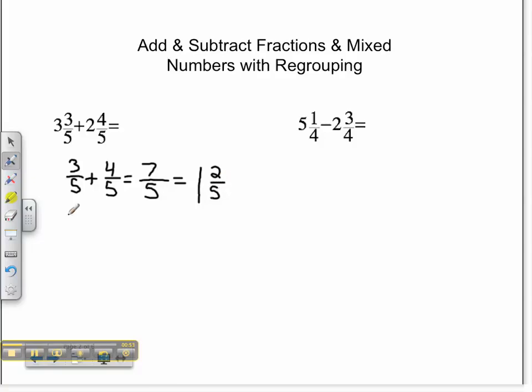So now let me add my whole numbers. I have 3 plus 2, that equals 5. I want to add my 1 from my fraction. So I have 6 as my whole number, and my 2/5. So my final answer is 6 and 2/5.